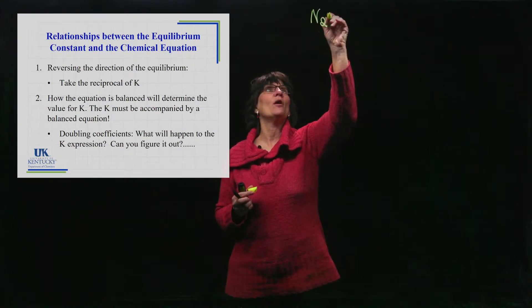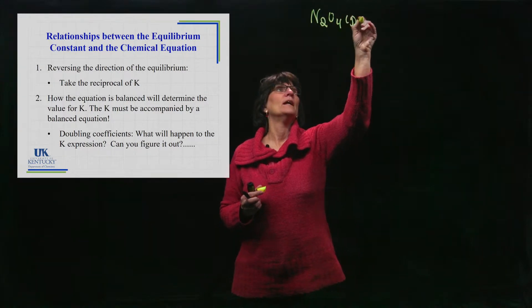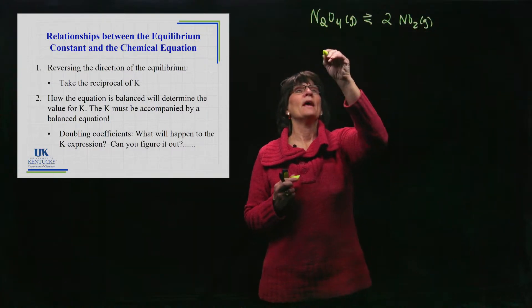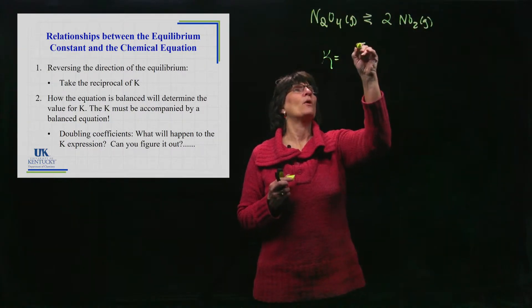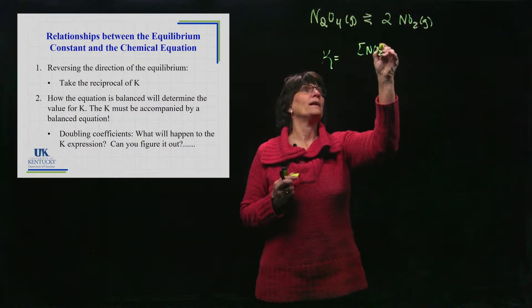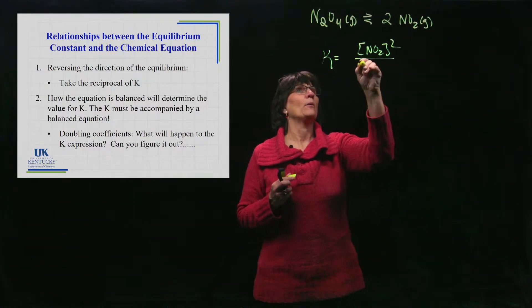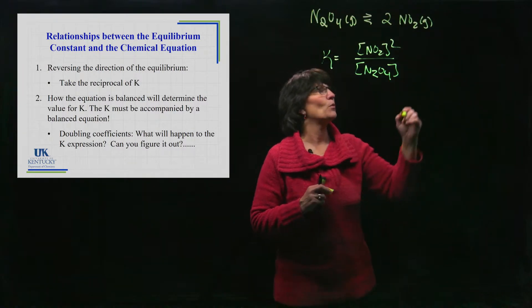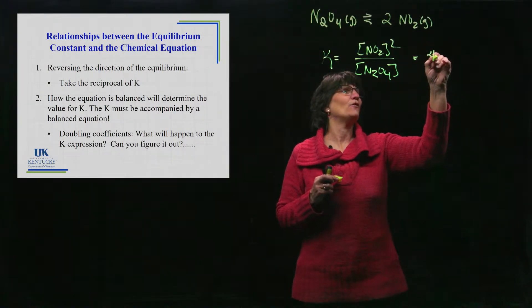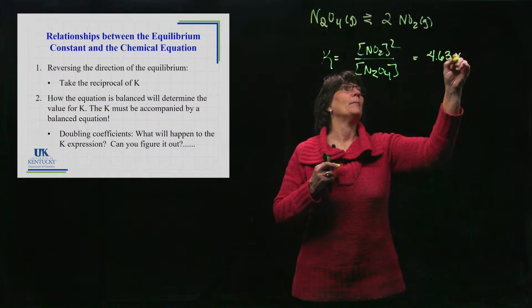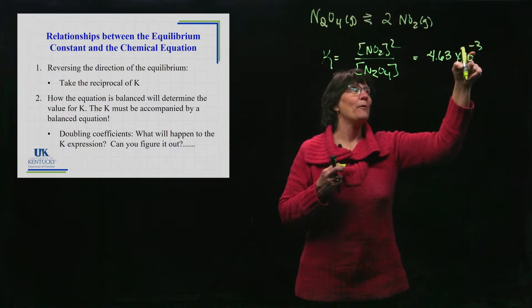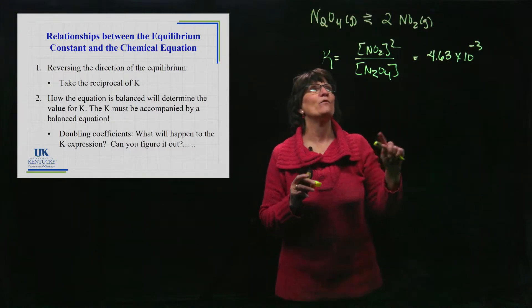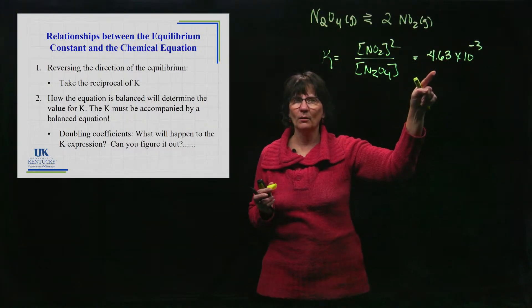We had N2O4 in equilibrium with two NO2 gas. Now the K is products over reactants raised to the power of their coefficients. I don't remember exactly what that number was, but it was something like four point six, something like that.